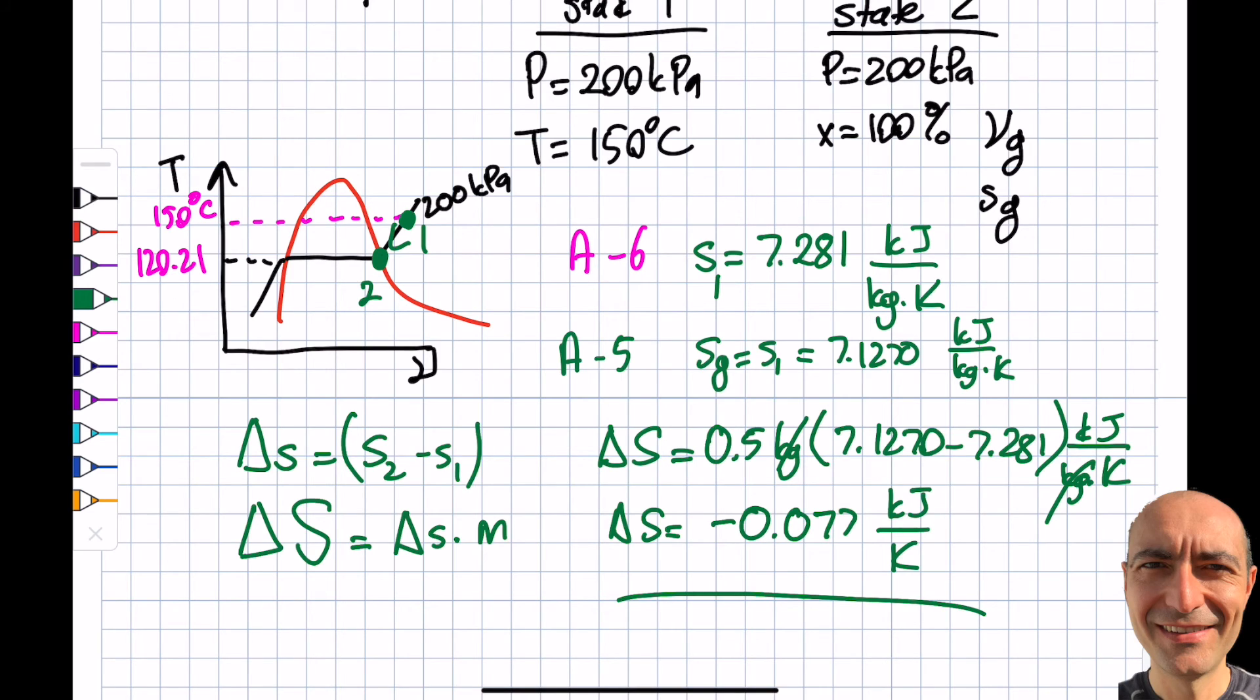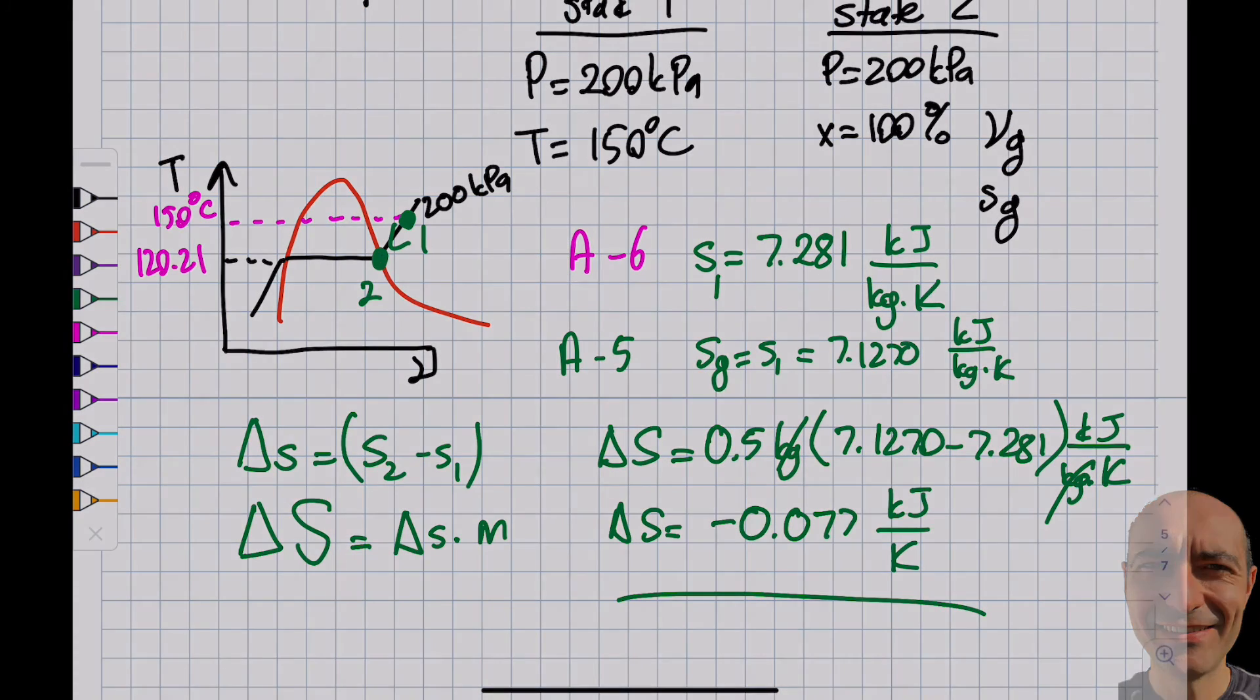As you can see, the entropy goes down. Actually, I did this in module 3—you can refer back to that video. I calculated the heat transfer; there's heat transfer going out, so that makes sense. The temperature is reducing; I'm removing heat from my system, so the entropy goes down. But remember, that doesn't say the S generated in this process is negative—it cannot be. Alright, that's gonna do it for me.